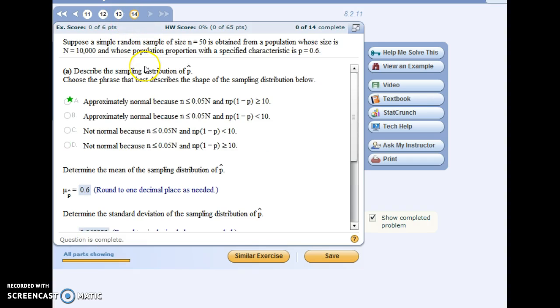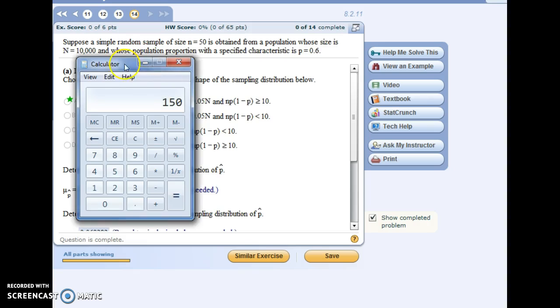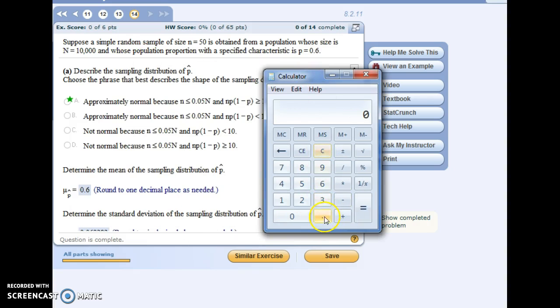For number 14, again, we're going to be looking at a distribution of the sample proportions. We have the size of our sample, the total amount in our entire population. And for this population, whatever characteristic we're looking at, 60% of the population has it. So describe the sampling distribution. There's two things we should be checking. We want to make sure our sample size is less than 5% of the entire population. So 5% of 10,000 would be 500. Our sample size is definitely less than that.